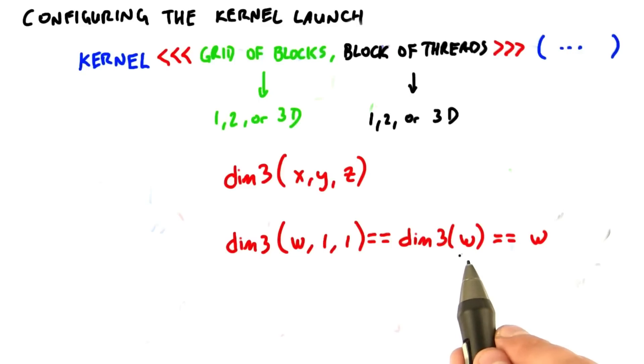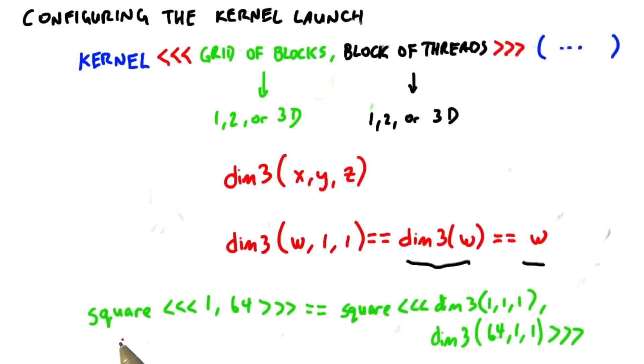So when we say dim3(w,1,1), that means the same thing as dim3(w), and you can actually abbreviate this with simply the integer w. So when we specified square of 1, 64, that was equivalent to square of dim3(1,1,1), dim3(64,1,1).